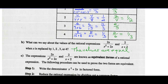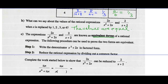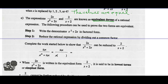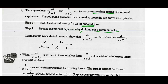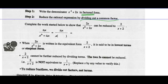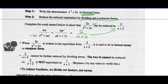These two expressions are known as equivalent forms of a rational expression. The following procedure can be used to prove the two forms are equivalent. Step 1: write the denominator in factored form, so we must know how to factor. Then reduce the rational expression by dividing out the common factor. The first expression is 2x over x squared plus 2x. Factor the denominator by taking out a common factor of x, leaving x(x + 2). The x's reduce and we're left with 2 over x plus 2. We would say that 2 over x plus 2 is in lowest terms or simplest form.